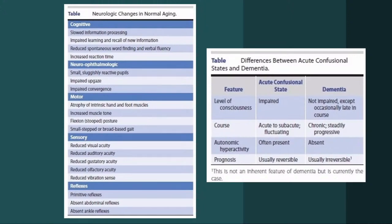There are types of dementia that are reversible. Normal pressure hydrocephalus — you just place a ventriculoperitoneal shunt and the dementia can be reversed. Neurosyphilis can cause dementia, but treating it with intramuscular benzathine penicillin may improve it. Vitamin B12 deficiency dementia is reversible — you simply replenish the deficient vitamin B12. However, Alzheimer's and frontotemporal dementia are irreversible.